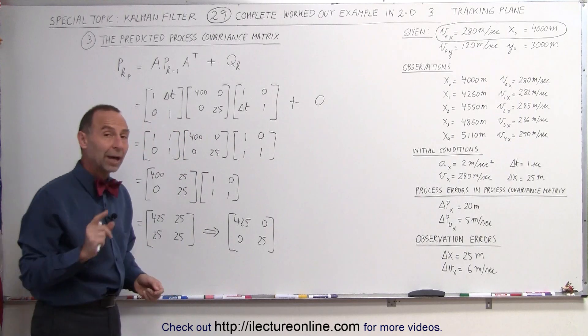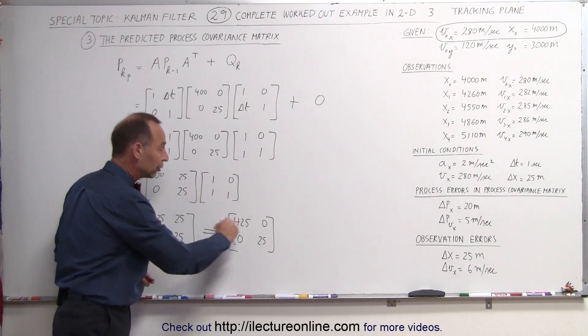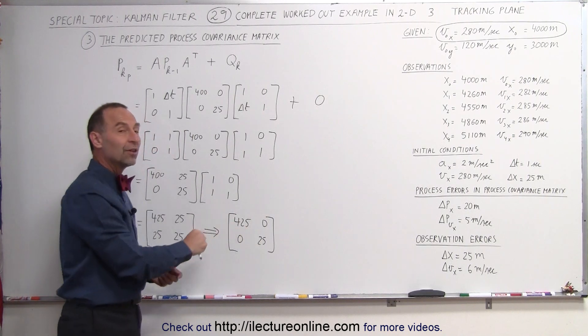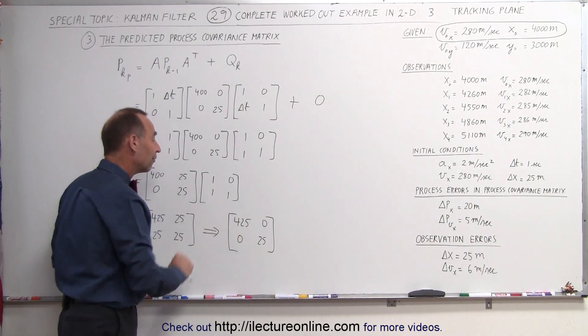However, this is now slightly different from what we had before. Notice in the diagonal term, this was 25, yes, but here we see a difference now. That used to be 400, this is now 425.